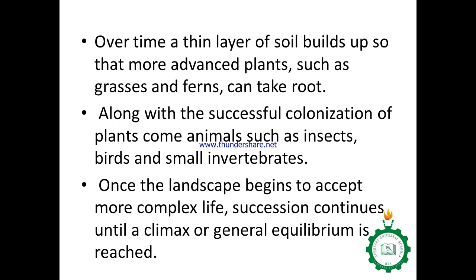In primary succession, the first organisms to take over are called pioneer organisms, or colonizers. Examples include algae, fungi, lichens, and mosses — the first ones seen on a bare land. They form a thin layer of soil, which is built up for more advanced plants like ferns and grasses to take root. Along with the successful colonization of plants, other animals also come in — insects, birds, and small invertebrates — because of the presence of these pioneer colonizers.